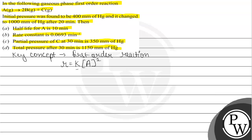The statements are A, B, C and D. We have to answer which are the correct ones. So let us start with this. A gives 2B plus C. And starting we have initial pressure was found to be 400 and initially the products will be 0.